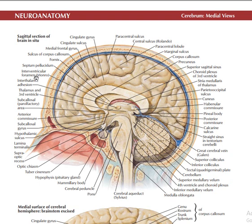You have the interthalamic adhesion, because the two thalami are separated, so you have an adhesion between them. This is the interthalamic adhesion. The thalamus extends all through here, and the interthalamic adhesion holds them together. At this point you have the subcallosal area, below the corpus callosum.